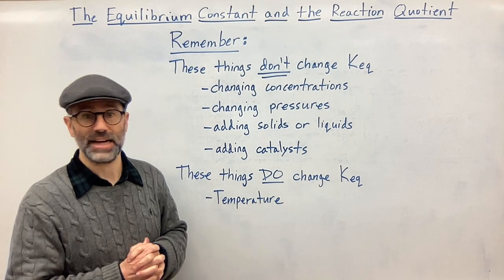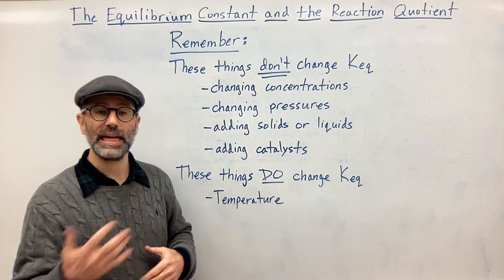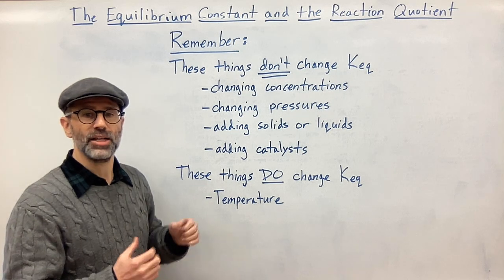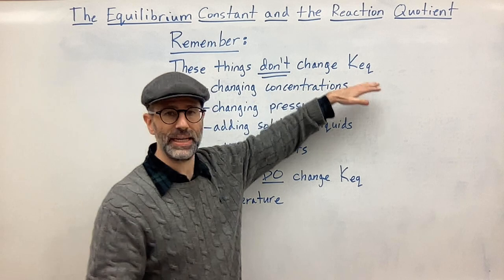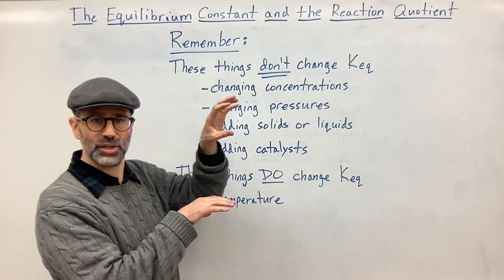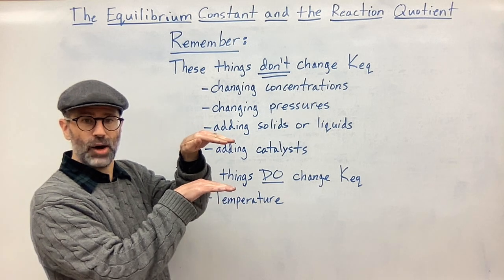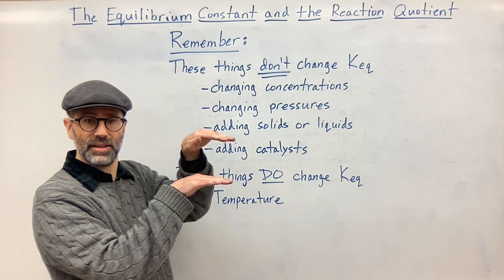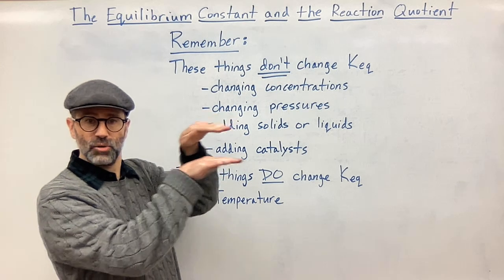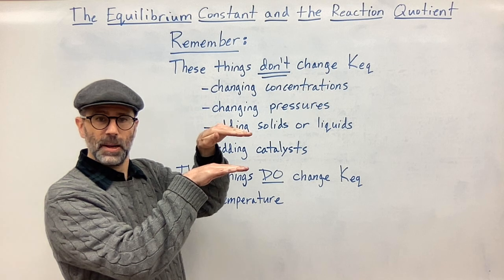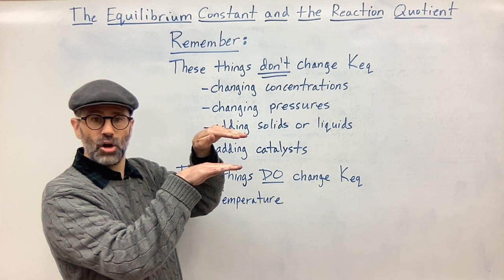Temperature, however, does change K-eq. When you increase or decrease temperature, you're not directly changing concentrations. K-eq is a relationship between the concentration of products over reactants. If I don't change concentrations, the ratio stays the same. But if I do change concentrations, they'll fluctuate until they reach the same ratio. With temperature changes, I'm not touching concentrations directly.